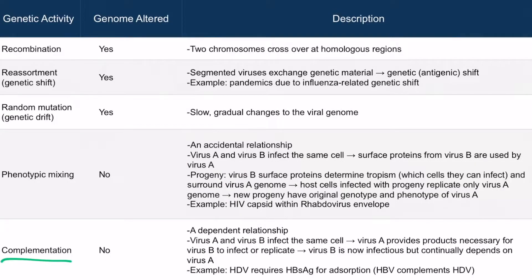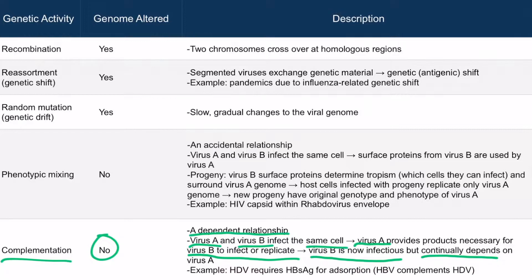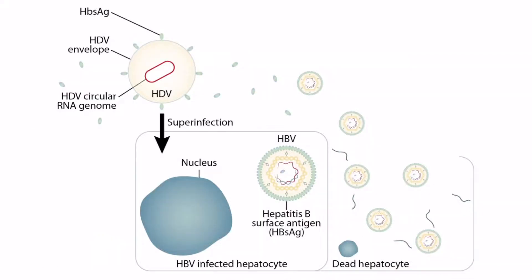Now let's talk about complementation. Complementation shares several features of phenotypic mixing — the genome of the virus is not altered. Complementation can be thought of as a dependent relationship. Virus A and virus B infect the same cell; virus A provides products necessary for virus B to infect or replicate. In other words, virus B is infectious because of virus A, but it continually depends on virus A. The best example is hepatitis D, which depends on the hepatitis B surface antigen for adsorption — hepatitis B complements hepatitis D. This image depicts that relationship.